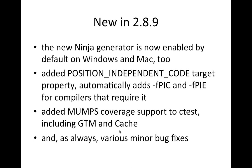A new target property called position-independent code has been added in this release. You can use that to automatically add compiler flags to produce position-independent code. If you've ever built a static library on Linux, you'll know you needed to adjust your flags for that in the past. With this new target property, CMake will take care of adding the right flags under the hood so you can link that static library into shared libraries and executables without worrying about it.